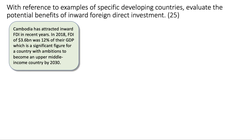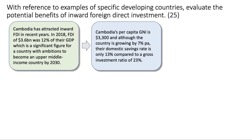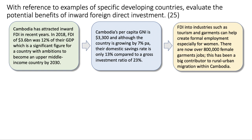Another potential benefit — let's take another example. Cambodia attracted inward FDI of just under four billion dollars in 2018, over 12% of their GDP, which is a significant figure for a country with ambitions to be an upper-middle-income country in the next decade or so. Cambodia's per capita GNI is $3,300. Although the economy is growing by 7% a year, their savings rate is only 13% compared to an investment ratio of 23%, so FDI helps overcome that savings gap.